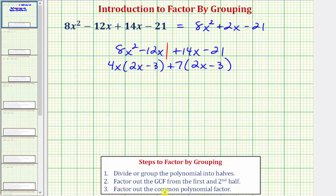Step three, we factor out the common polynomial factor. Whenever we factor by grouping, we should have a common polynomial factor in these products. Notice in this case, we do have a common binomial factor of 2x minus 3.